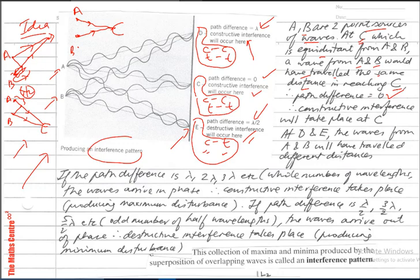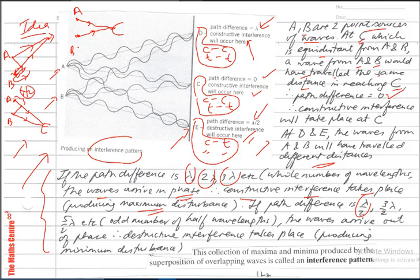At D and E, the waves from A and B will have travelled different distances. If the path difference is λ, 2λ, 3λ, etc. — whole numbers of wavelengths — the waves arrive in phase, so constructive interference takes place, producing maximum disturbance. If the path difference is λ/2, 3λ/2, 5λ/2, etc. — odd numbers of half wavelengths — the waves arrive out of phase, giving destructive interference and minimum disturbance. This collection of maxima and minima produced by the superposition of overlapping waves is called an interference pattern.